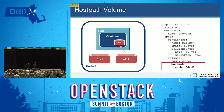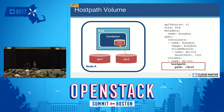Let's look at host path volumes and how you use them. On the left, I have a node with two local directories: directory one and directory two. On the right is the pod spec for my application. At the bottom is where I specify my host path volume — I'm specifying the path to directory two. When my pod launches, the system will mount directory two into my container. That's pretty simple, but there are a lot of problems with this approach.